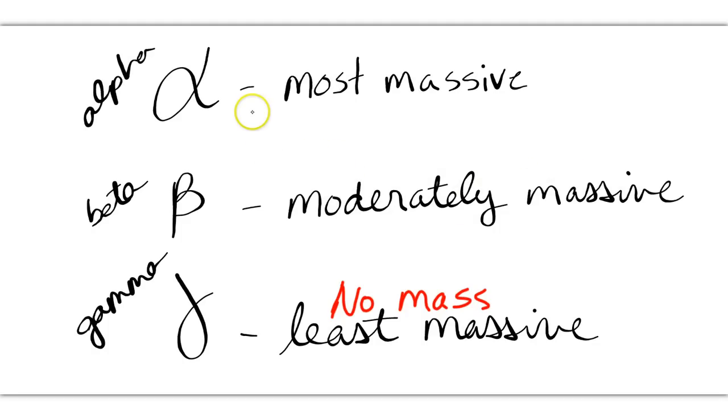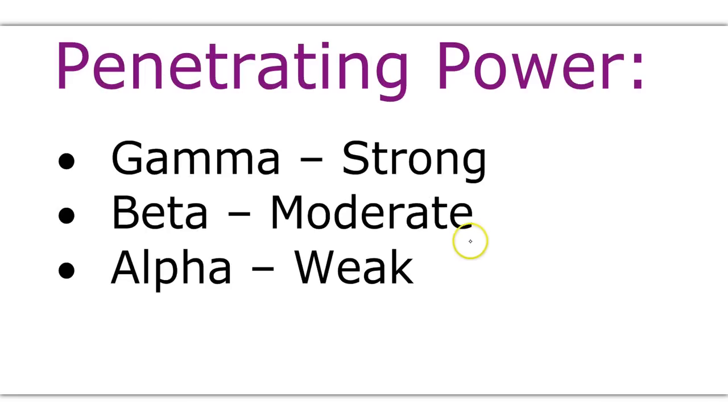This is the reason why they have their different penetrating powers. Alpha can penetrate the least, is stopped by paper because it's so massive. Whereas beta, because it's moderately massive, can penetrate through paper and somewhat through the skin, but is stopped by aluminum foil. And then gamma radiation has no mass at all. So that's why it's capable of going through paper, going through metals, anything but thick concrete and thick lead. Gamma has the strongest penetrating power, beta has moderate, and alpha has the weakest, all due to their varying masses.